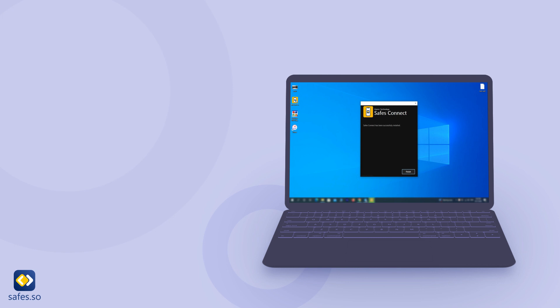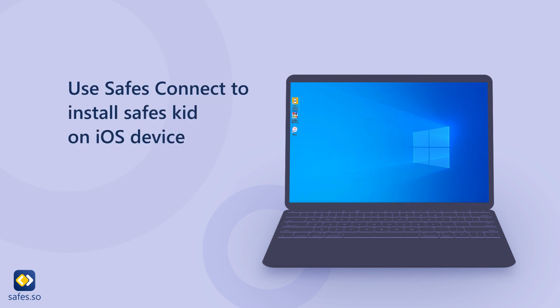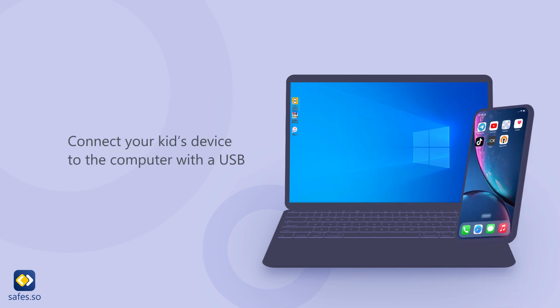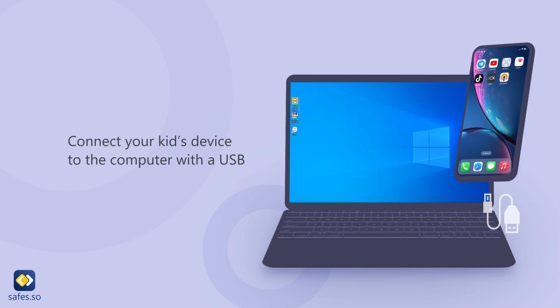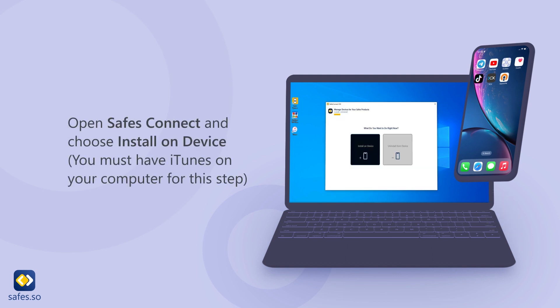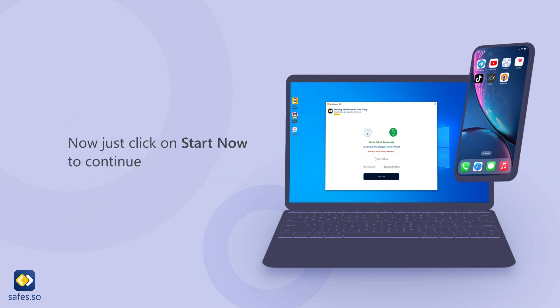Use Safes Connect to install Safes Kit on your iOS device. Connect your kid's device to the computer with a USB cable. Open Safes Connect and choose Install on Device. Note that you must have iTunes on your computer for this step. Click Start Now to continue.